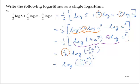And now finally, remembering from a previous exercise that the square root of x is the same as x to the one half power, and taking that in reverse, I can rewrite this as the log of the square root of 5a to the seventh over c to the third.